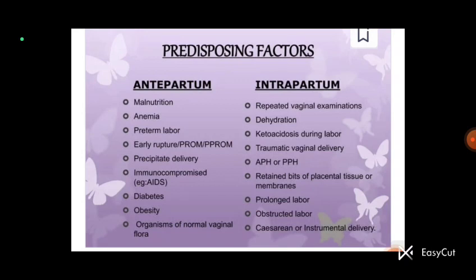Those who are obese, with a high body mass index, also have higher chances of sepsis. Regarding normal vaginal flora, if there is an alteration in the pH of the normal vaginal flora, the organisms responsible for UTI or sepsis can start to grow, increasing the chances of sepsis occurring.